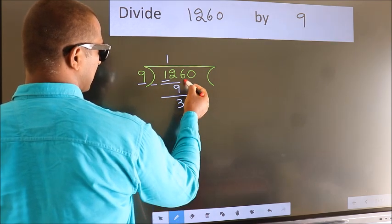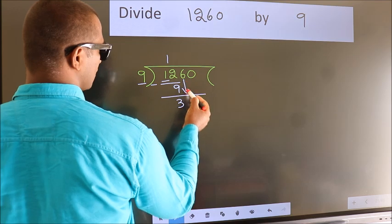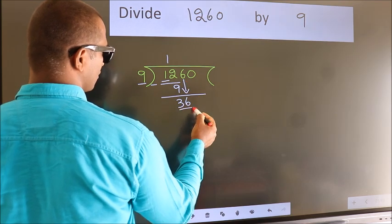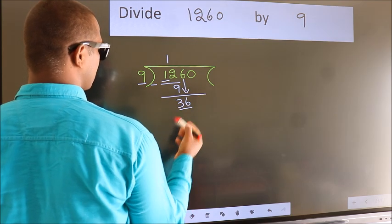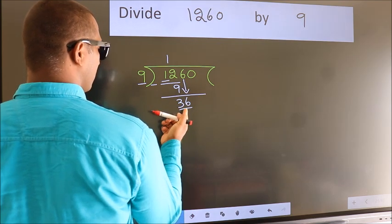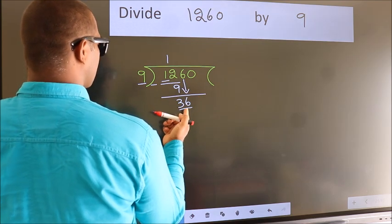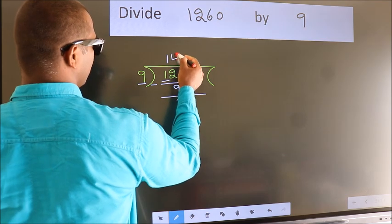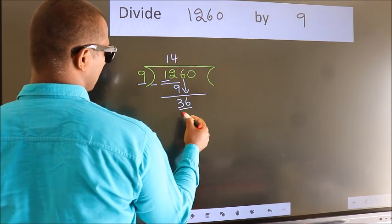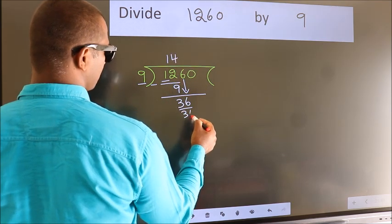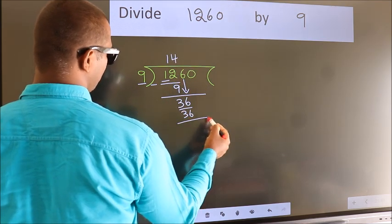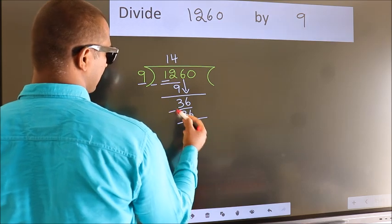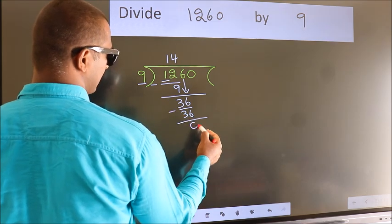After this, bring down the beside number. So, 6 comes down — so we have 36. When do we get 36 in the 9 table? 9 fours are 36. Now we subtract. We get 0.